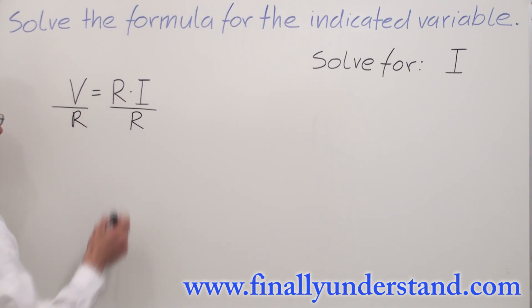Take a look at what will happen. R and R will cancel out, and I'm going to end up with V over R is equal to I.